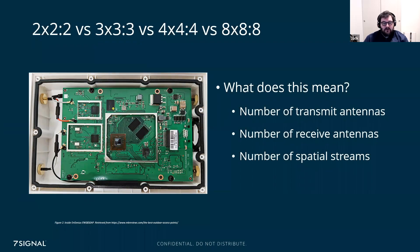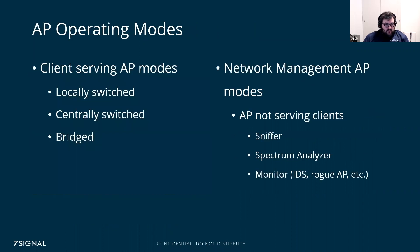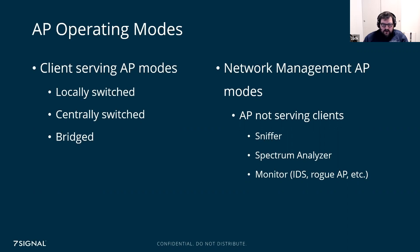Making informed decisions before spending thousands of dollars to roll out or refresh a Wi-Fi environment is critical. In terms of different ways an access point can be used, there are different operating modes. The two main ones are: APs that are actively serving clients — where clients connect to the network and access resources — and APs that are operating in other modes. Client-serving APs can be locally switched, like Cisco's FlexConnect, where wireless client authentication and management frames go to the controller but actual data is routed locally.